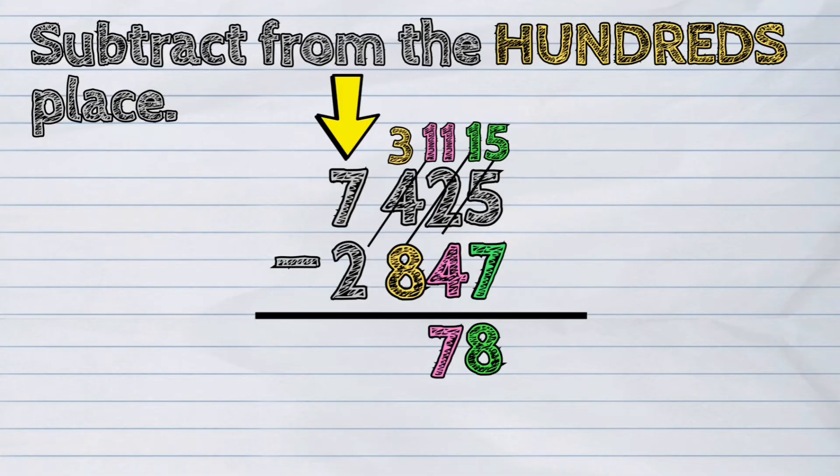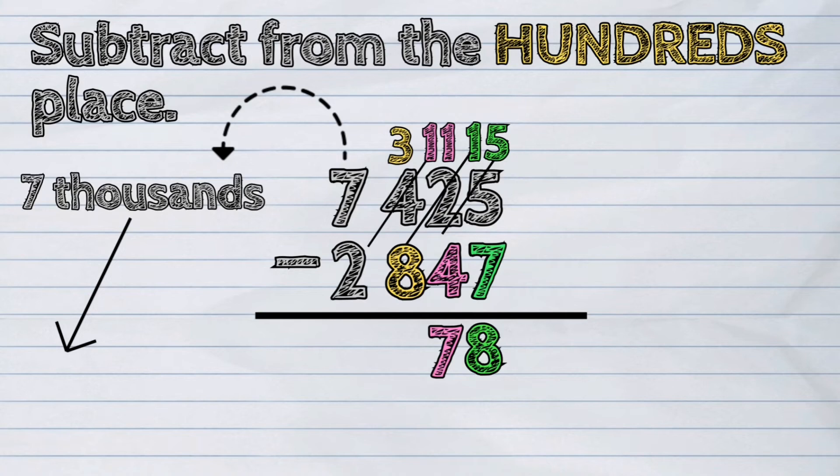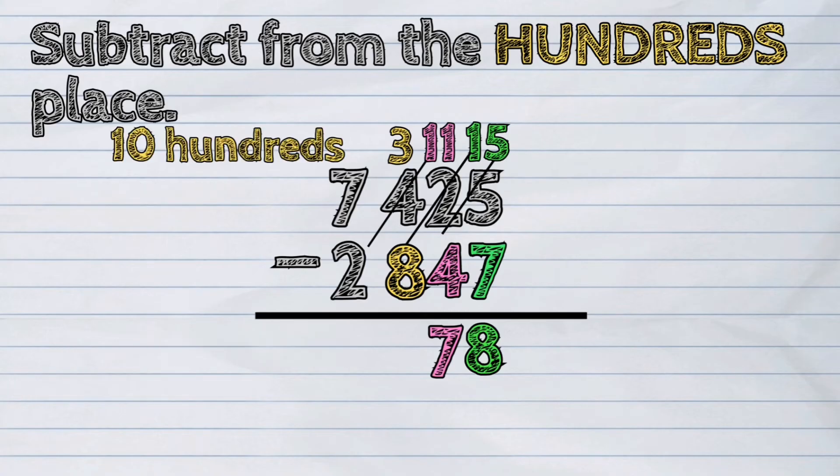The digit in the thousands place is seven. When regrouped, it will become six thousands and ten hundreds. We will borrow its group of ten. Ten hundreds plus three hundreds is thirteen hundreds.